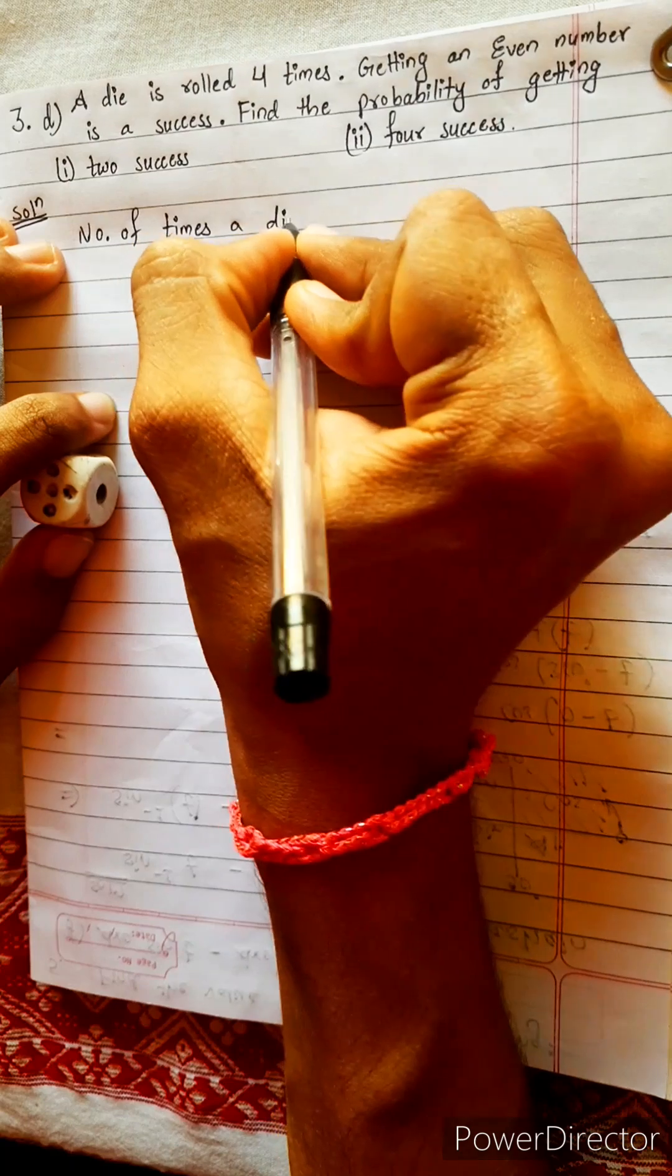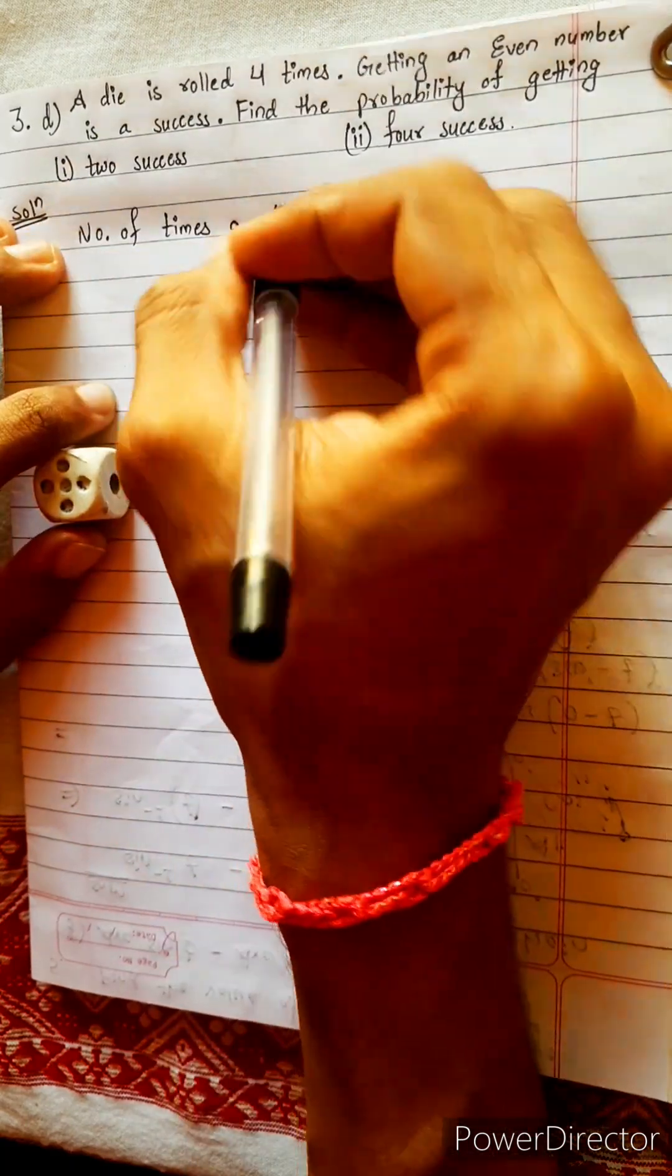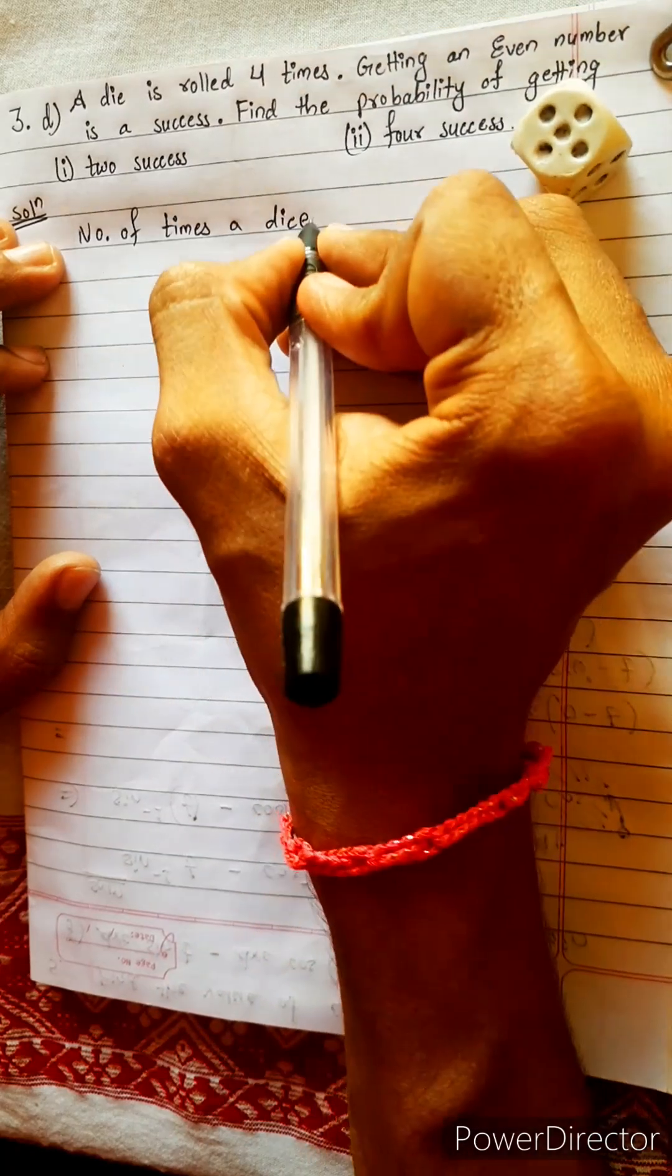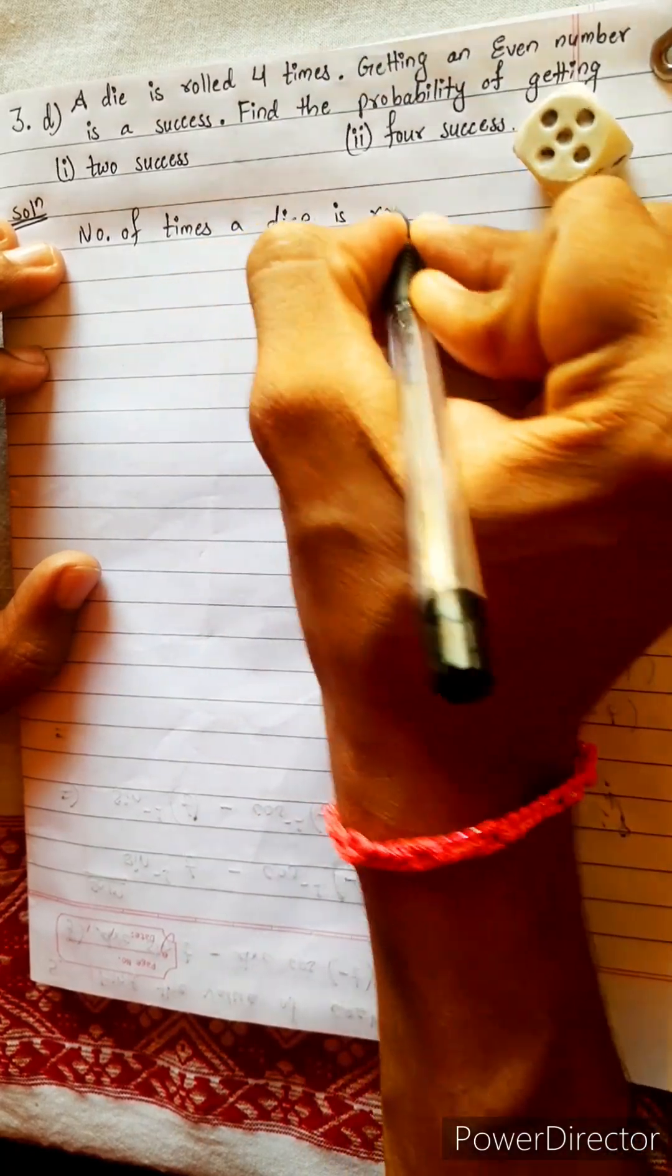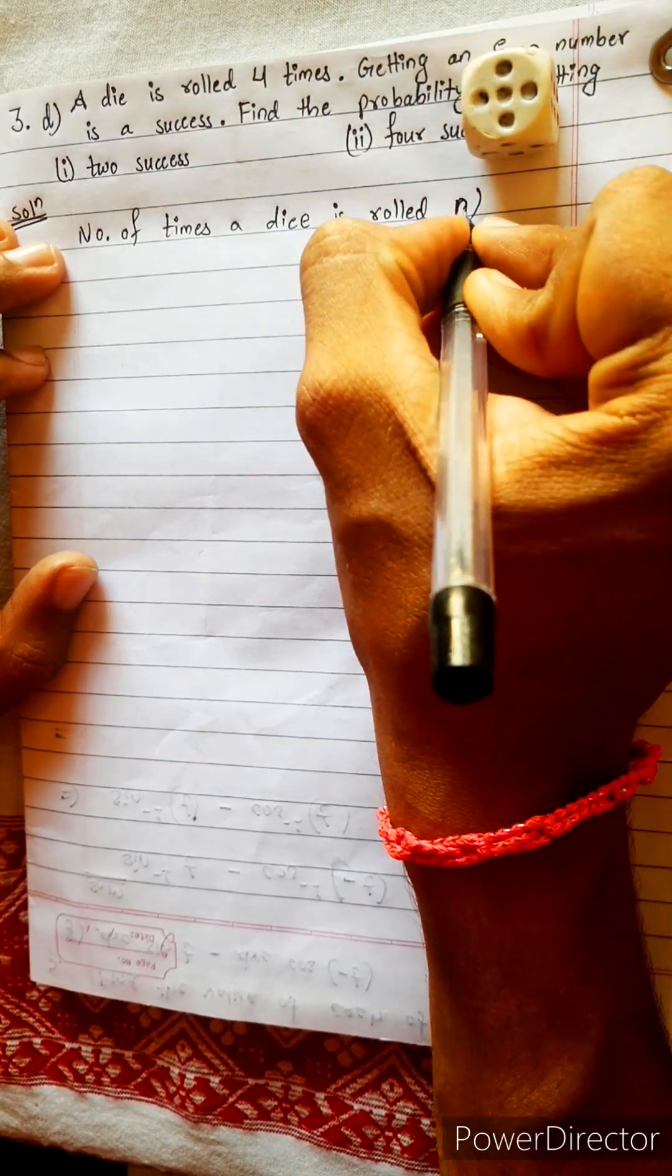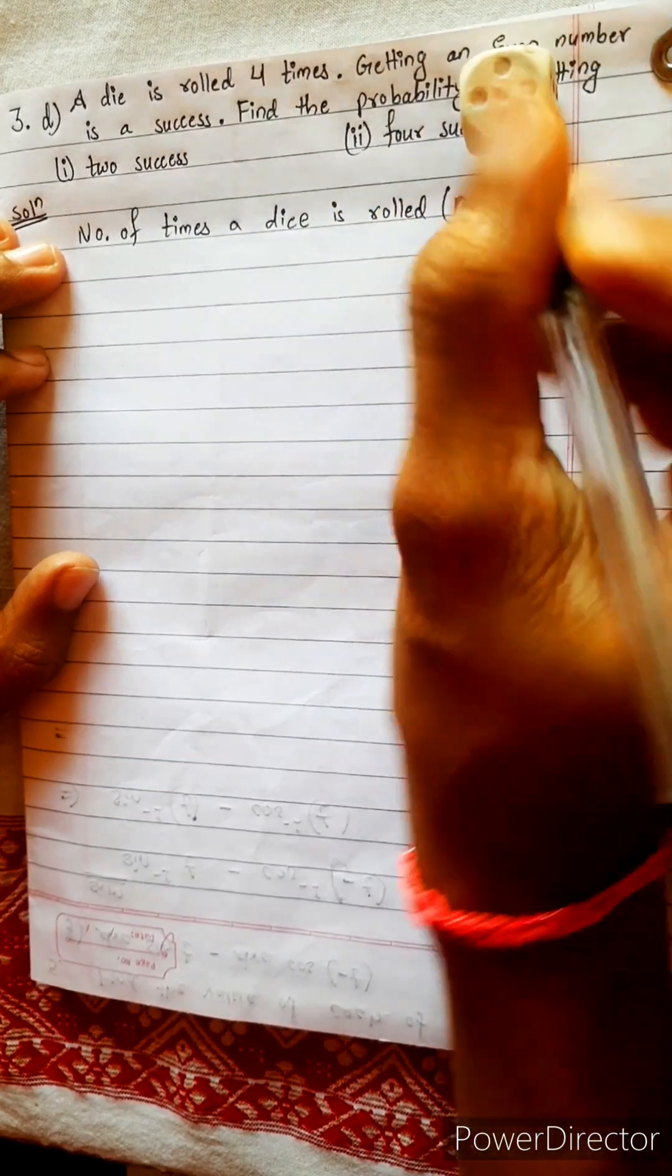Let's not write this die. Die means death. We understand by telling dice. Because our common language, a dice is rolled. How many times a dice is rolled? It is represented by n, small n. n equals to four.